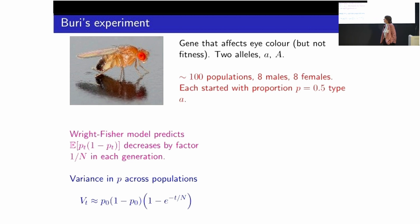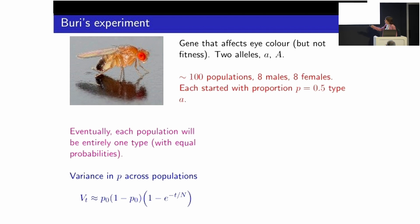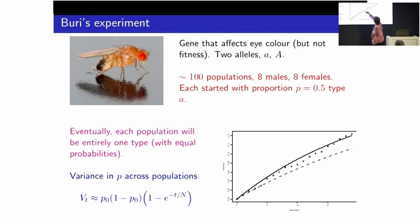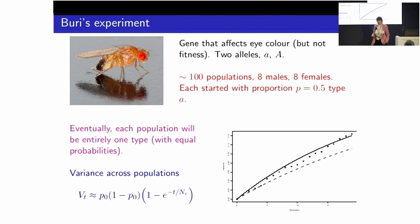And he propagated these populations forward. So after every generation he measured the proportion of the different colors and he sampled 16 individuals, eight males and eight females, and produced the next generation. Now what the Wright-Fisher model predicts is that if I look at the proportion of individuals of type little a and call it pt after t generations, and I multiply that by the proportion of capital A's, and I calculate the average of that over my hundred populations, then it should decrease by a factor one over n in each generation, where n here is 16. So here's Buri's data, the circles. And the Wright-Fisher prediction is this one. Not great. On the other hand, this is also a prediction of the Wright-Fisher model. It's just it has a different population size. It has a population size of 11 and a half. So it turns out that if I substitute an effective population size instead of a real population size, it's actually a pretty good fit.